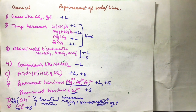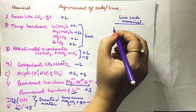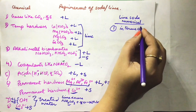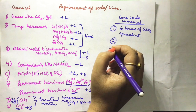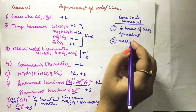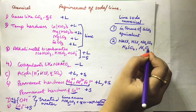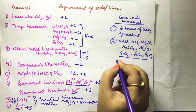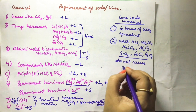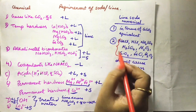Hardness is expressed in terms of calcium carbonate equivalent because CaCO3 is our standard. We need to keep in mind that if there are chemicals such as NaCl, KCl, Na2SO4, K2SO4, Al2O3, Silica, FeO, or Fe2O3, these chemicals do not cause hardness.